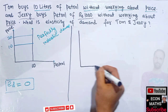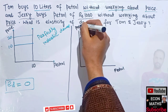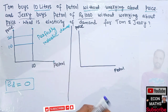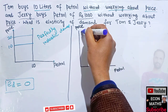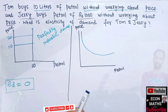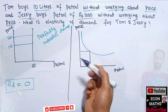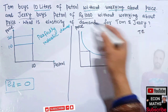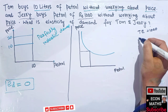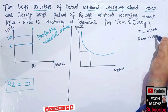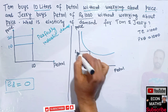Graphically, we have quantity of petrol on one axis and price of petrol on the other. Since Jerry's expenditure is constant at 1000 rupees, his demand curve will look like a rectangular hyperbola. Total expenditure for Jerry equals Price × Quantity = 1000.